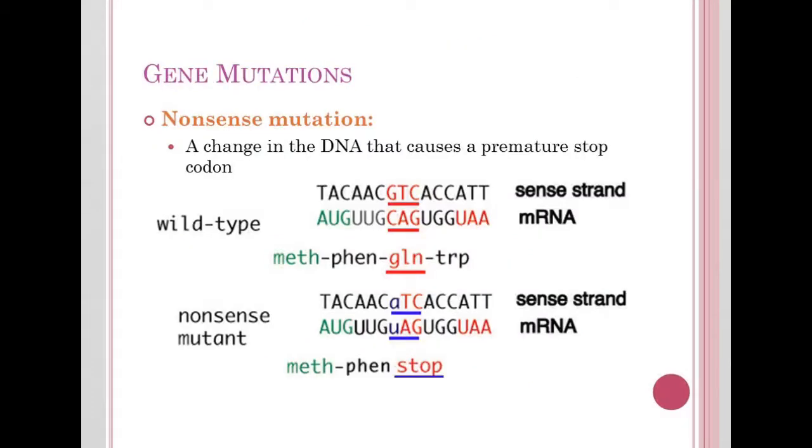The last type of substitution mutation is a nonsense mutation. This actually causes a premature stop codon. Here we have again our original DNA, RNA, and amino acid strand. If we substitute an A in for what used to be a G, we now get a UAG in the middle of our mRNA, which codes for a stop.